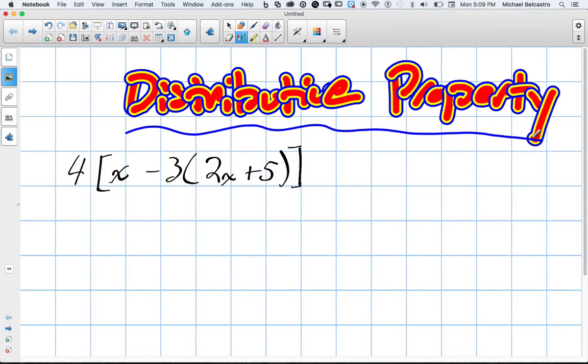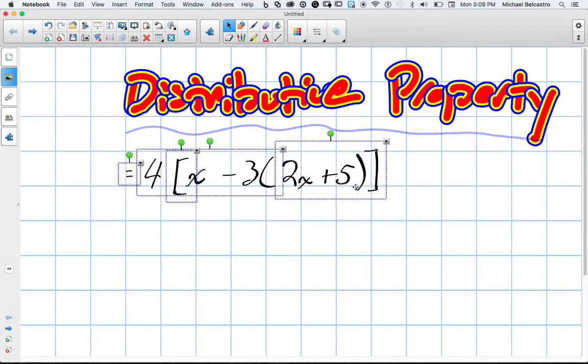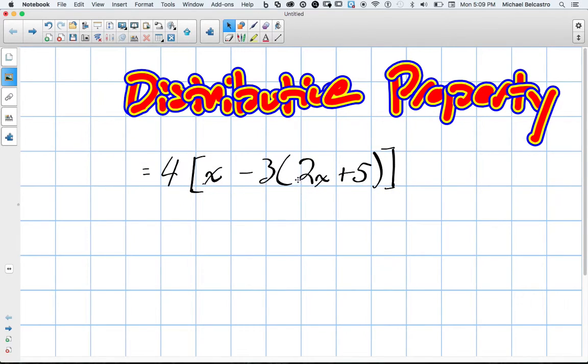We're going to look at distributive property, which is the name of this, and we should have an equal sign here. Essentially we have some equation on the right side of our function here, our relationship, and we want to simplify this here.